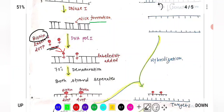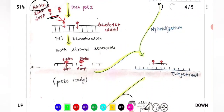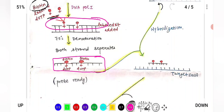Denaturation separates both strands. The upper strand, where biotin-labeled nucleotides were added, becomes our probe. A probe is a short single-stranded DNA or RNA sequence that is complementary to our gene of interest.